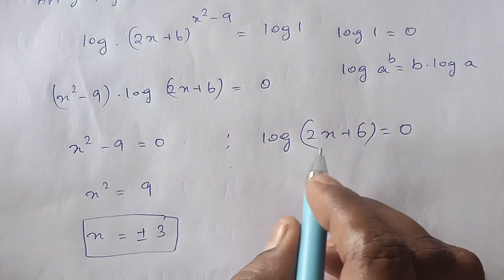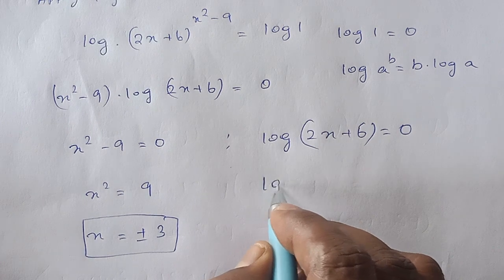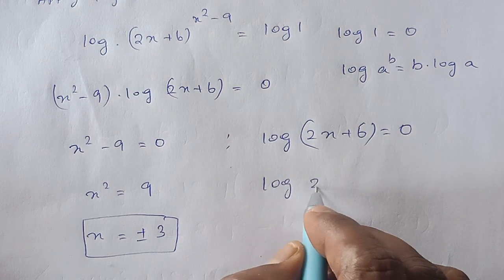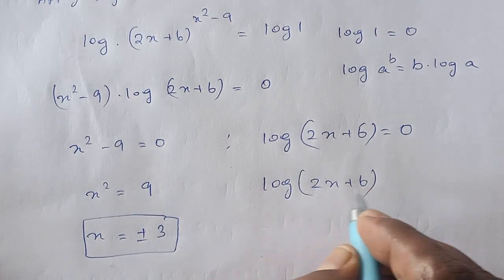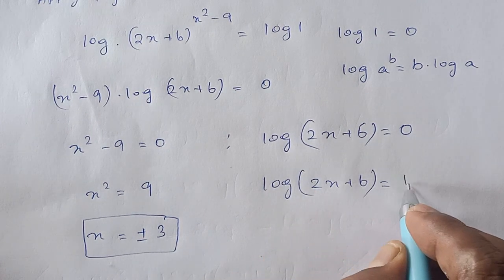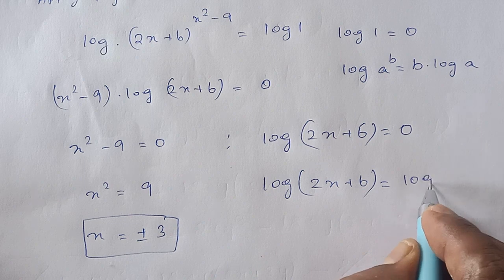Now for the second case, we can write log (2x plus 6) equals 0 as log (2x plus 6) equals log 1.